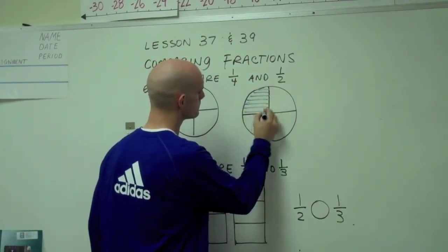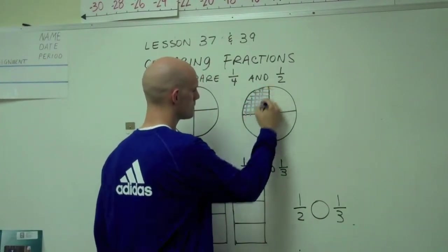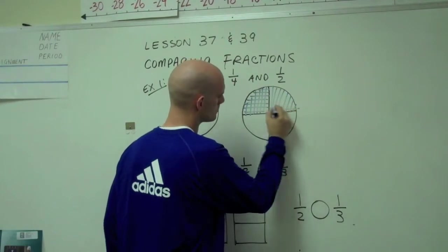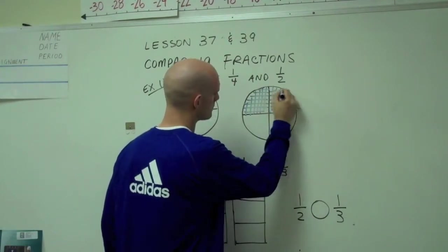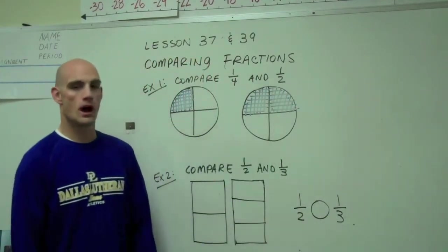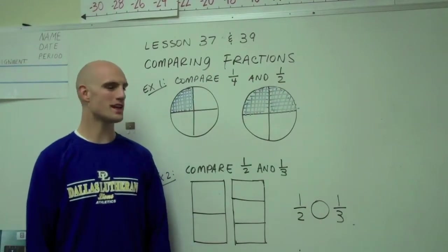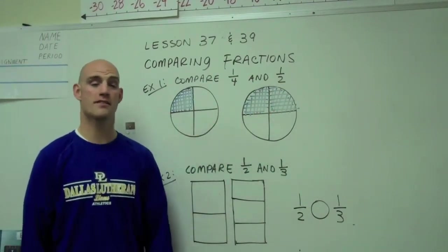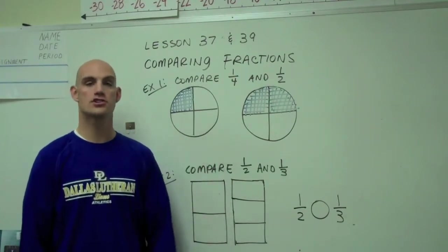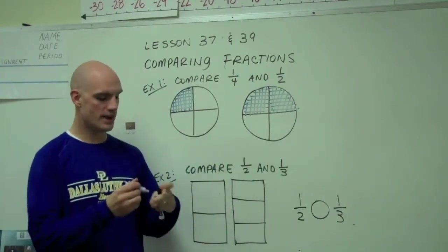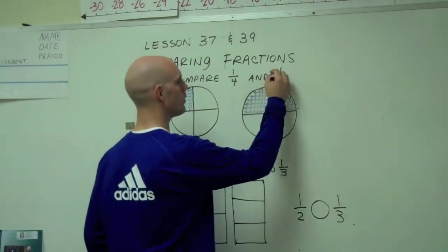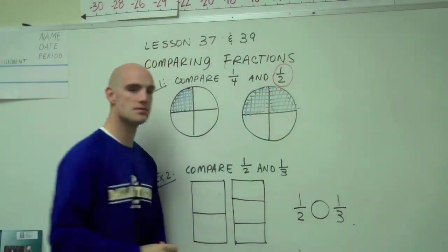If I shade one half of the circle, upon comparison, I notice that if I've shaded one half, I've shaded far more than I've shaded if I only shade one fourth. So I know that one half is bigger. To show this, I'll simply circle one half as being bigger.